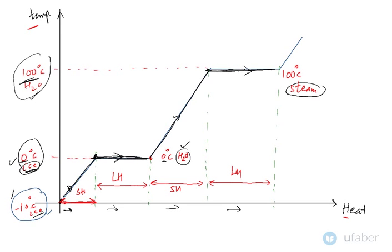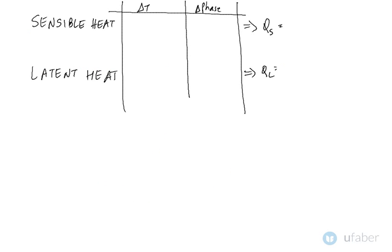Now summarizing it in the next slide is that sensible heat you have some temperature change but you do not have any phase change. In latent heat you do not have any temperature change but you have a certain phase change.